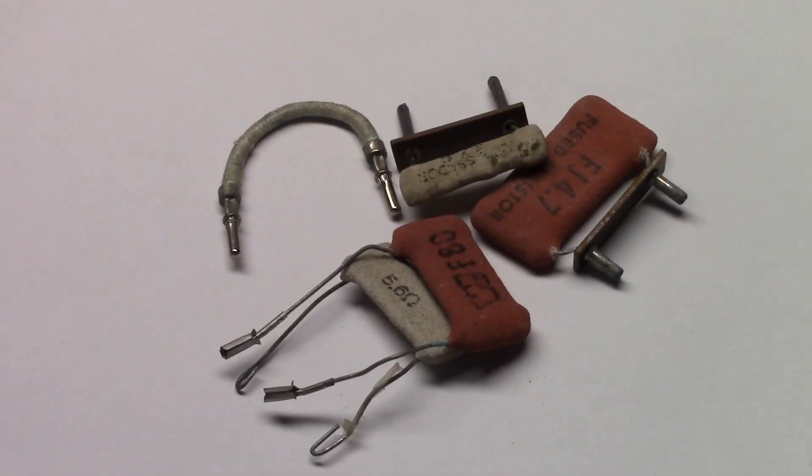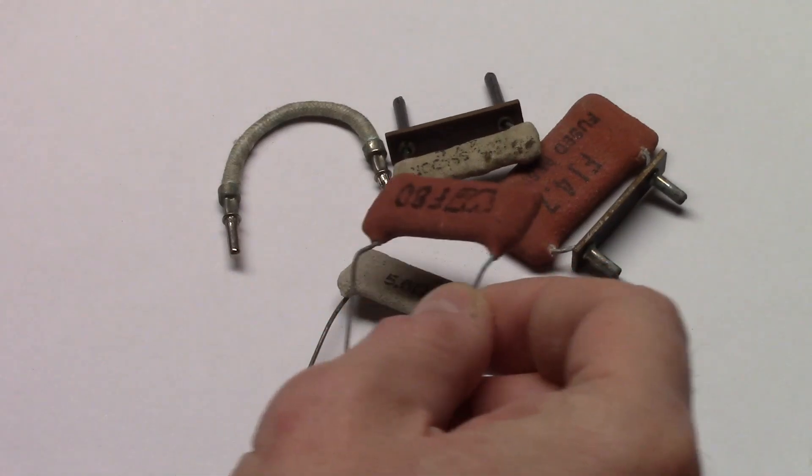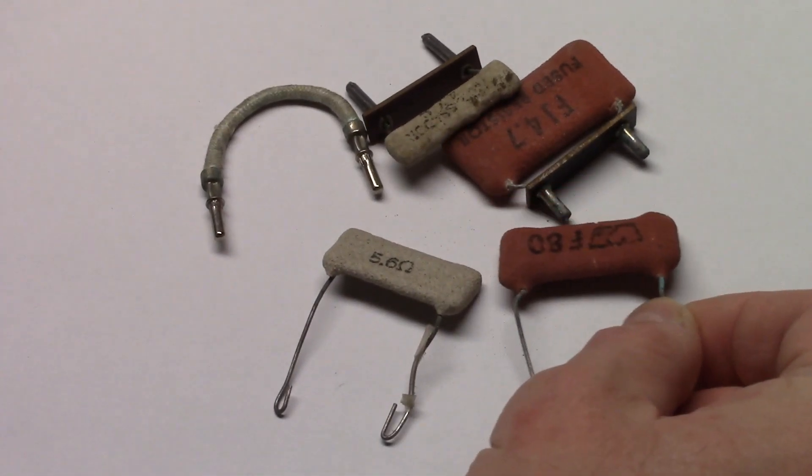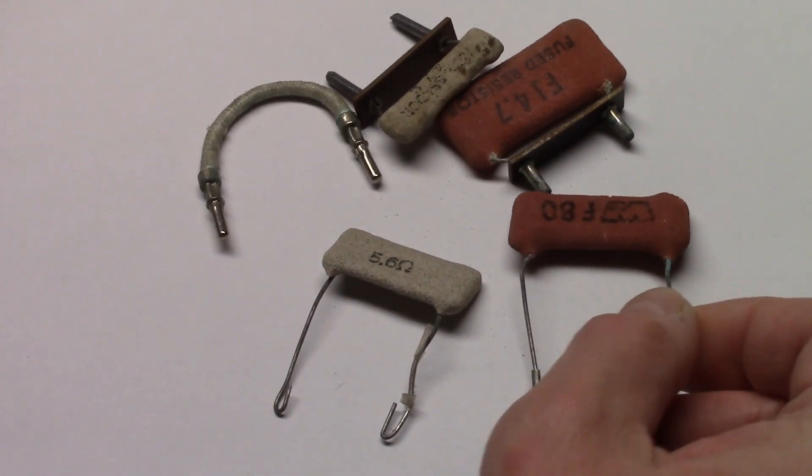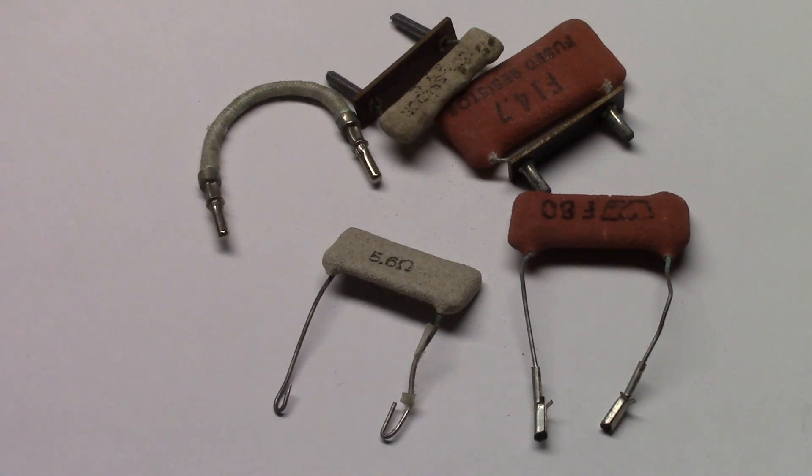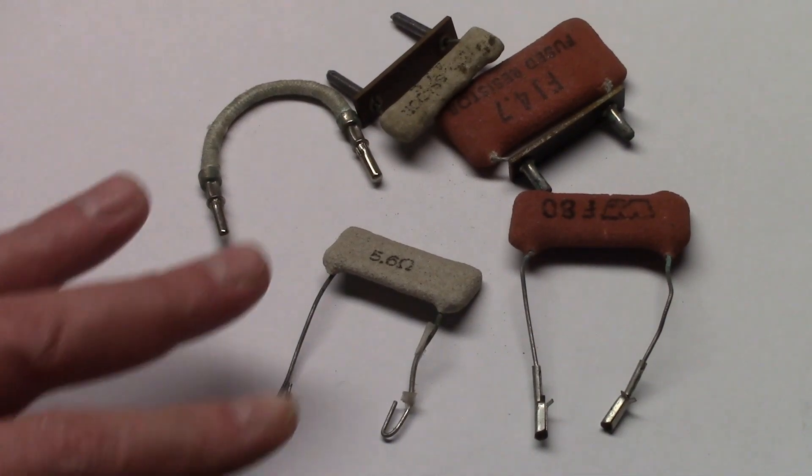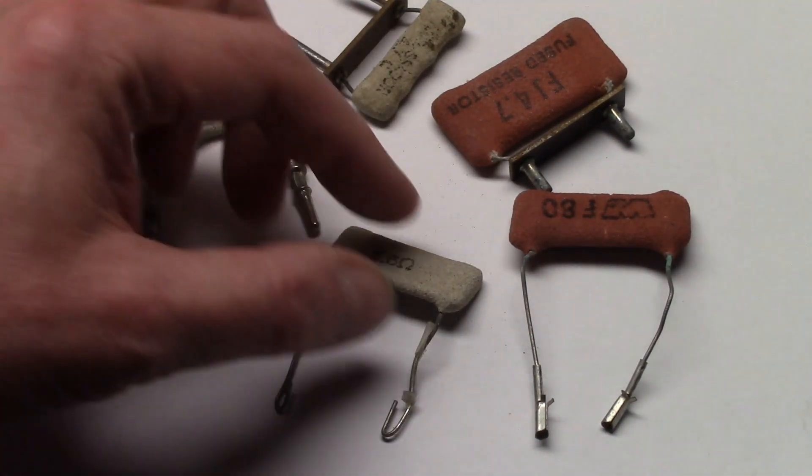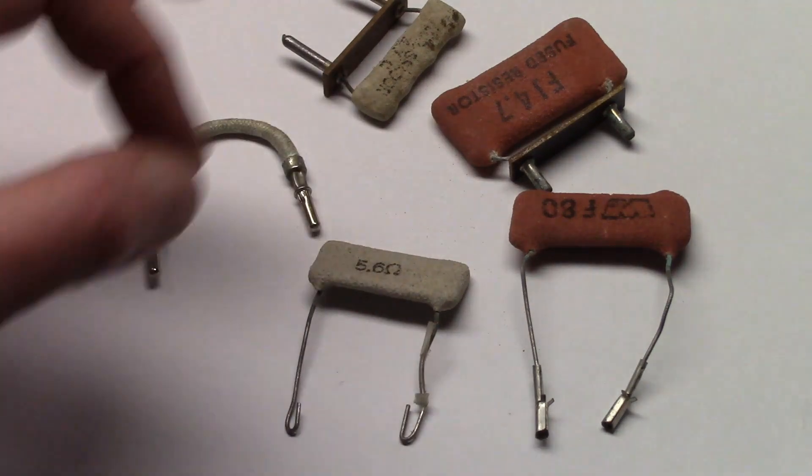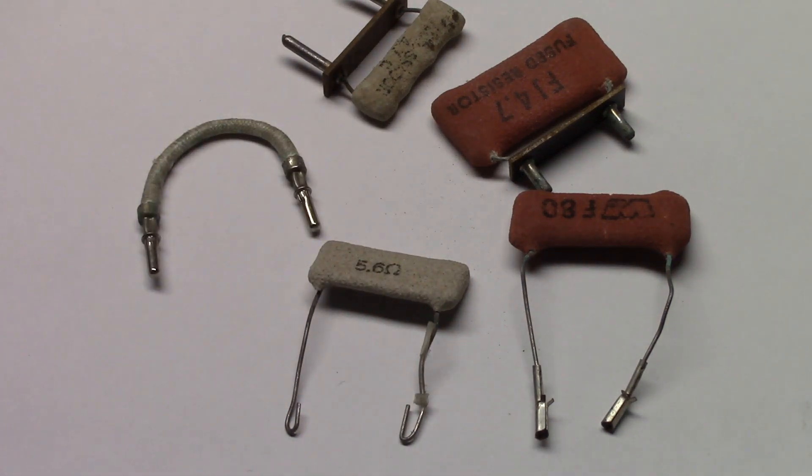Hey guys, welcome to another edition of Predicta Restoration Tips. In this episode, we're going to be talking about the Fusible Resistor, also known as a Fusistor, or a Fusit, or a number of different brand names. They all boil down to the same thing: it is a combination resistor-fuse.